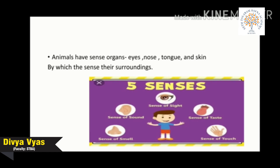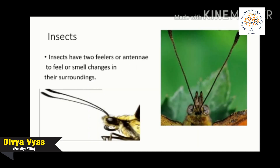Animals have sense organs by which they sense their surroundings and react. Animals have five sense organs: eyes, nose, ears, tongue, and skin. Insects have two feelers or antennae to feel or smell changes in their surroundings.